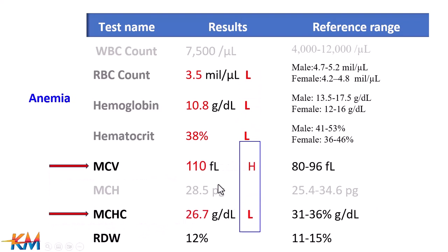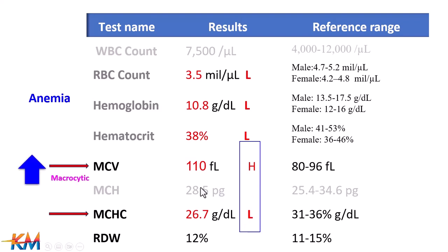As with the upper parameters, if there is any change from reference ranges, the result will appear in red color. The letter L is used to indicate a decrease, and the letter H indicates an increase beyond the reference range. A relation between these two parameters is then made to determine the cause of anemia.